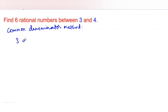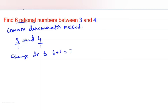The given rational numbers are 3 and 4. We want to make their denominators the same — currently both have denominator 1, so they are 3 by 1 and 4 by 1. Since we want 6 rational numbers, we change the denominator to 6 plus 1, that is 7. So 3 by 1 becomes 21 by 7 and 4 by 1 becomes 28 by 7.